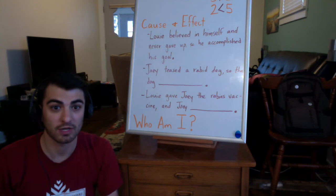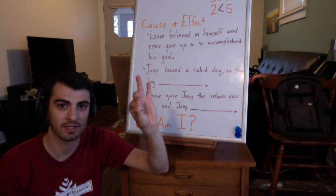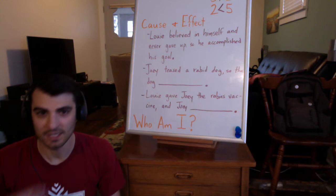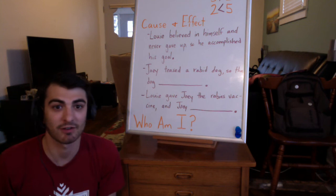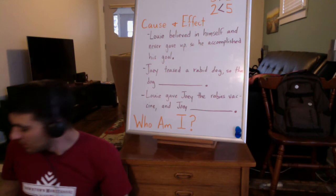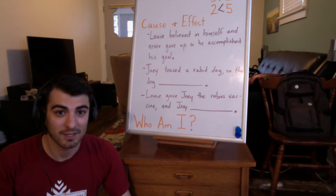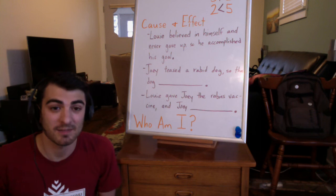So yesterday we looked at three story elements: we looked at plot, conflict, and resolution. The plot was the series of related events that make up the story, and plots usually have a clear beginning, middle, and end. I encouraged you to identify the beginning, middle, and end of the story about Louis Pasteur. Interestingly enough, people came up with two different ideas. Some people told the story of Louis Pasteur believing in himself, studying, working really hard, not giving up when people made fun of him, and eventually accomplishing his goal — using beginning, middle, and end.